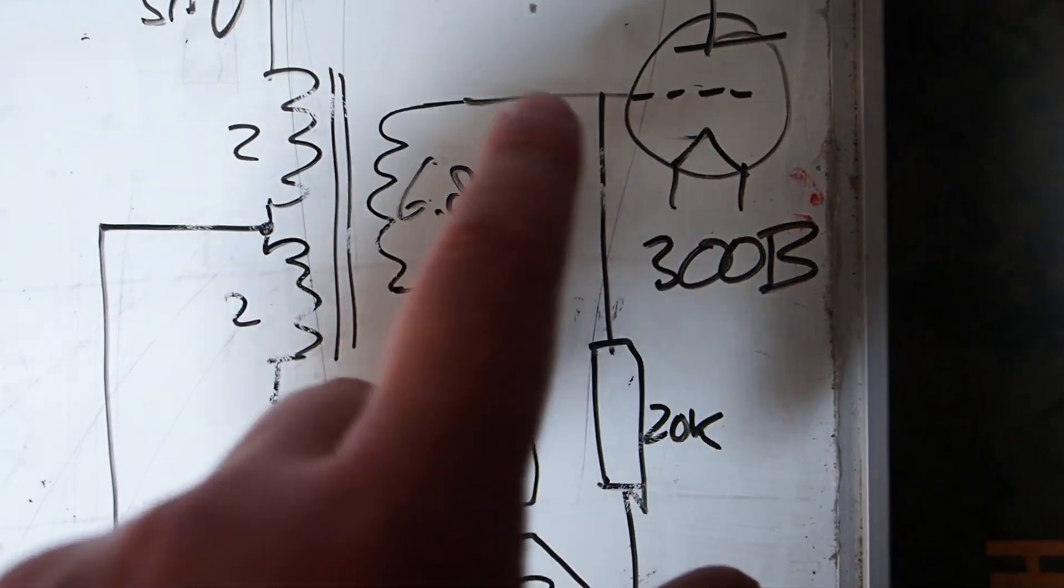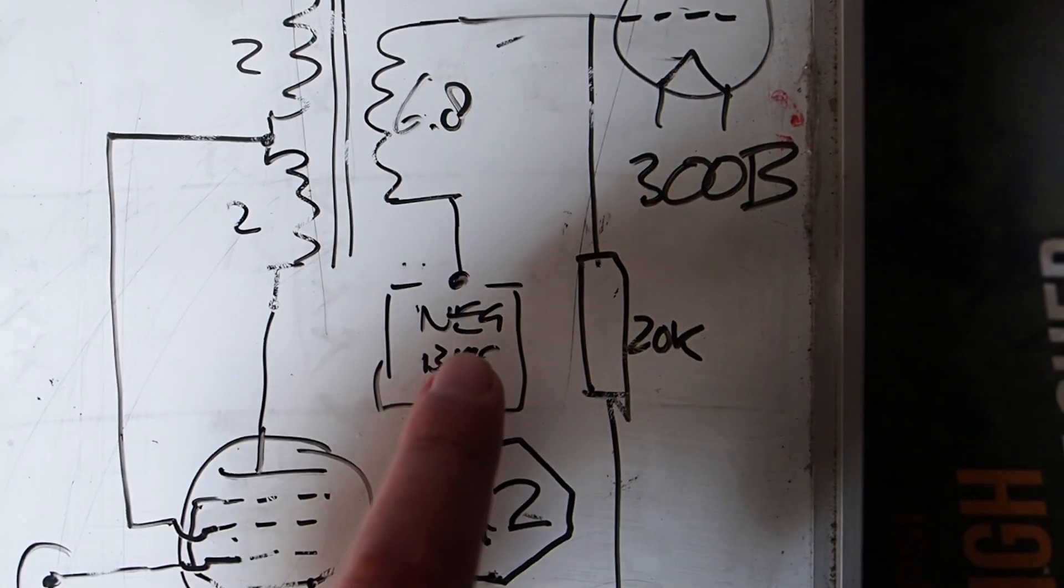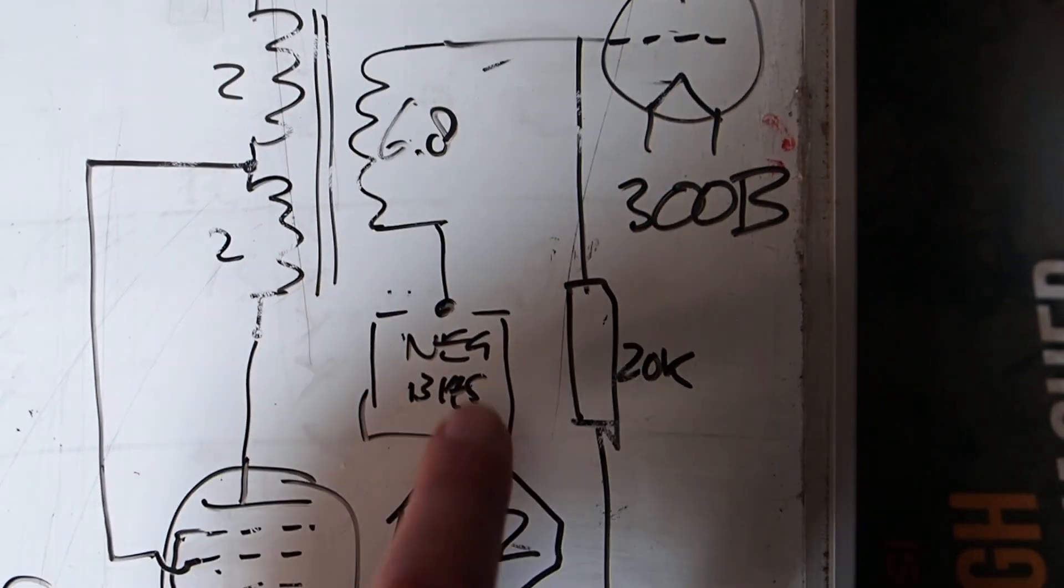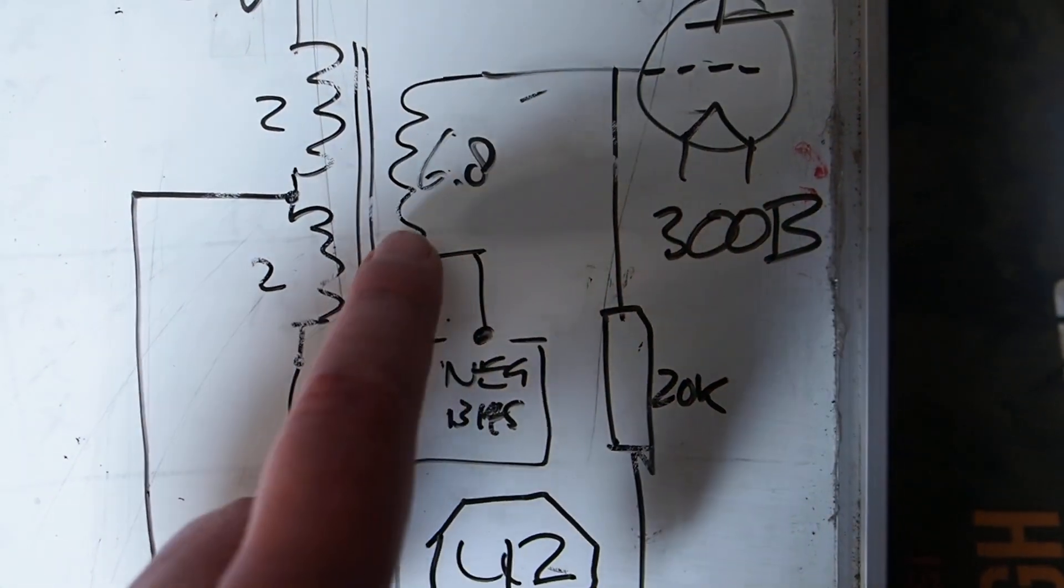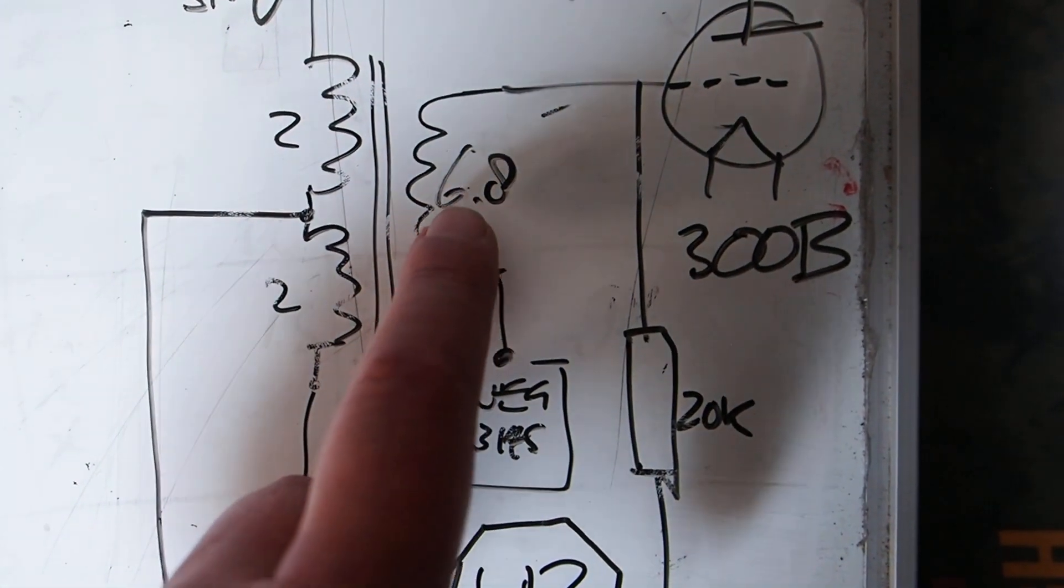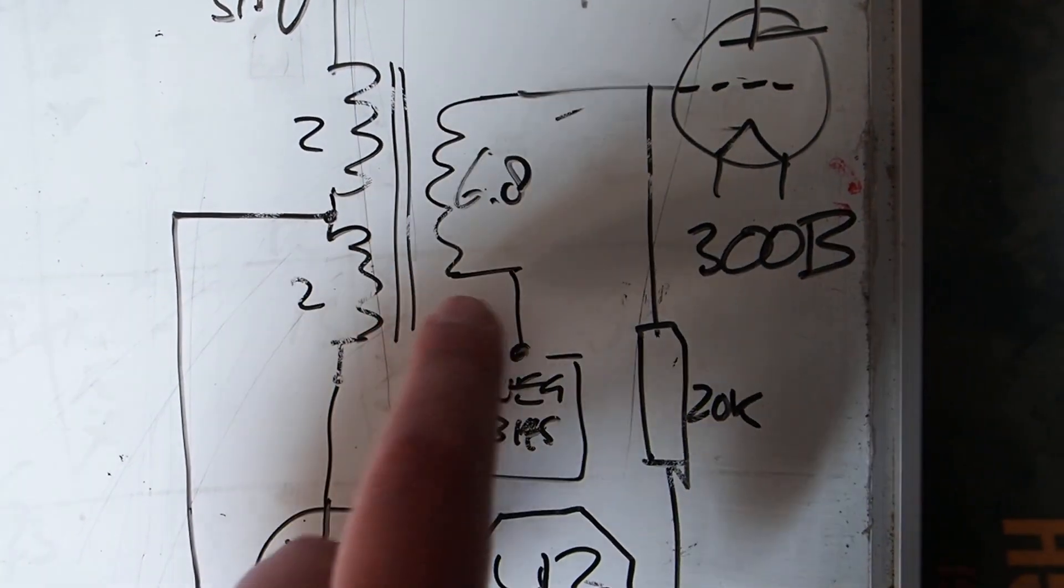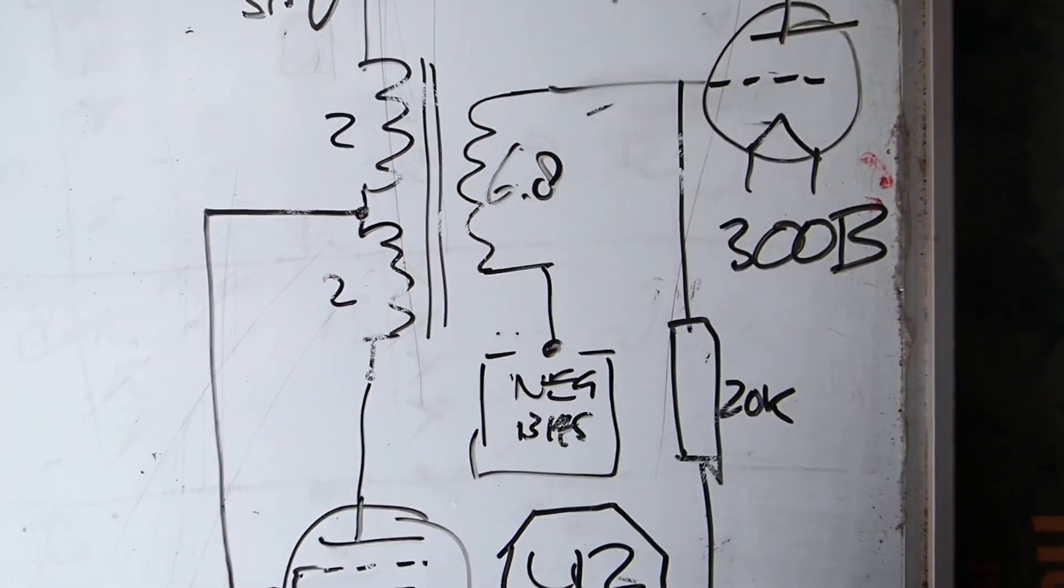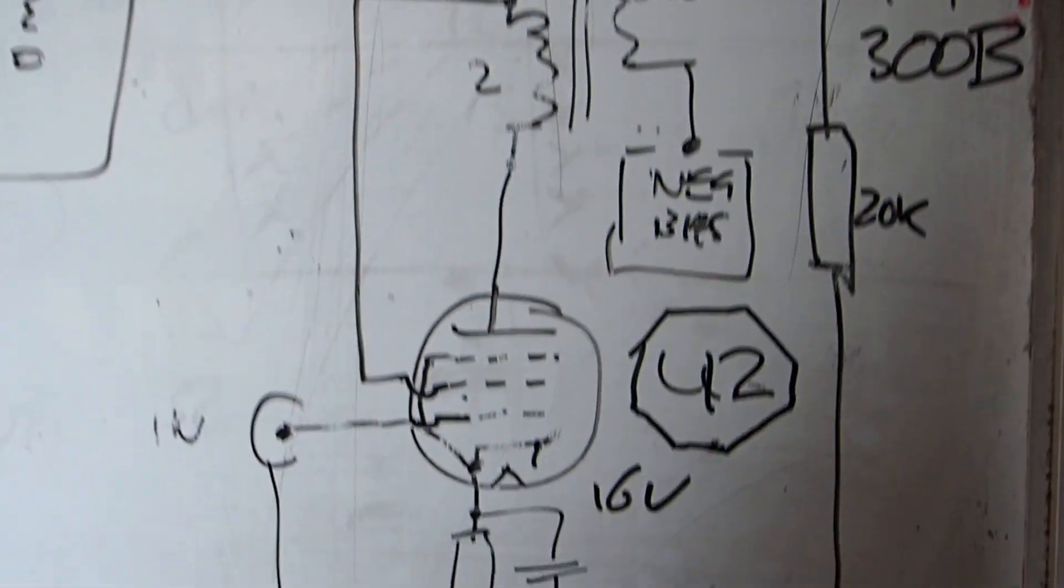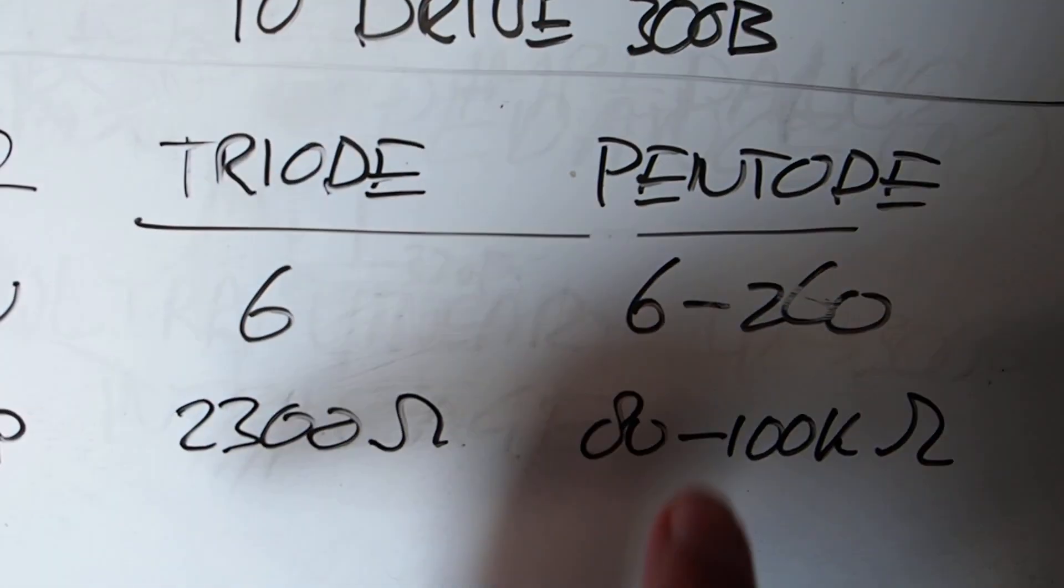So the 42 drives an interstage and then drives the 300B. Then you have the same thing. The 300B is a very low DC resistance to the ground, or negative bias in my case. And the AC, the music signal, gets superimposed using the interstage transformer. So that is a very good solution.